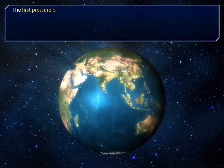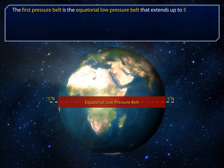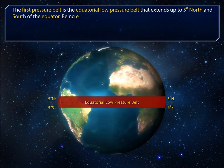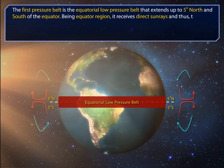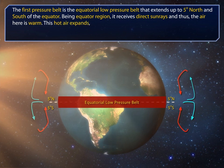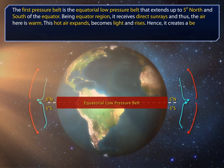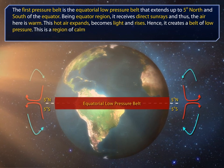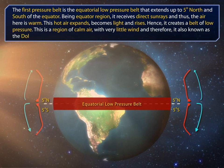The first pressure belt is the equatorial low pressure belt that extends up to 5 degrees north and south of the equator. Being an equatorial region, it receives direct sun rays and thus the air here is warm. This hot air expands, becomes light and rises, creating a belt of low pressure. This is a region of calm air with very little wind, and therefore it is also known as the doldrums.